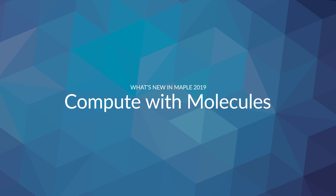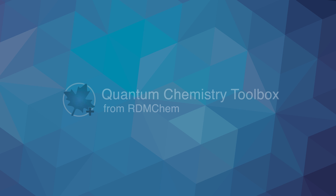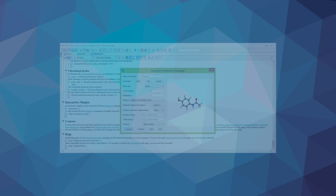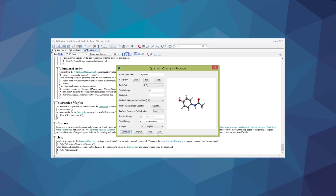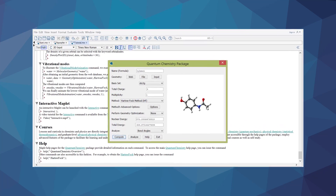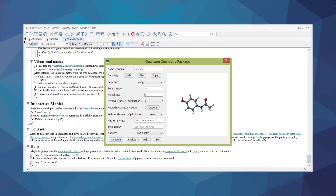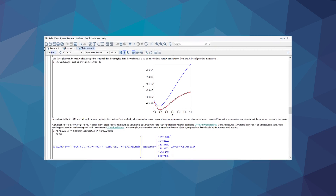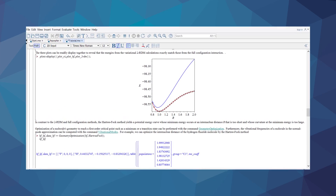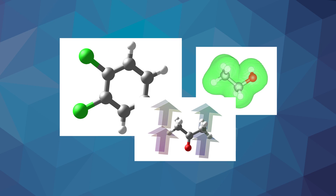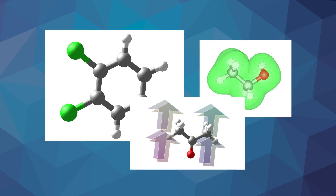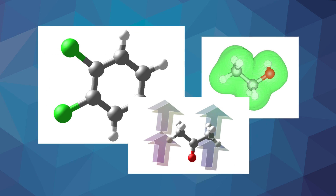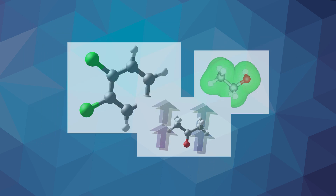The Quantum Chemistry Toolbox from RDM Chem, a new Maple add-on toolbox, provides a comprehensive, easy-to-use environment for the parallel computation of electronic energies and properties of molecules. This toolbox can be used to study, understand, predict, and design molecules for applications in engineering, molecular biology, and physics, and can be used by researchers, educators, and students.